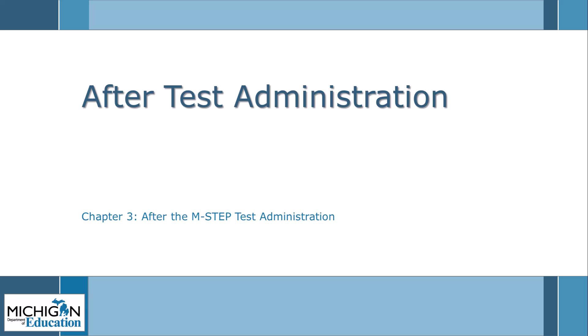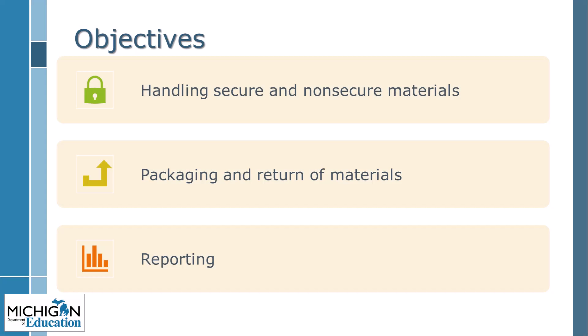This section discusses Chapter 3 of the M-STEP grades 8 and 11 test administration training: after the M-STEP test administration. First, I will discuss the appropriate handling of secure and non-secure materials after testing. Next, I will cover the packaging and return of materials for schools with paper/pencil materials. I will end by discussing preliminary reports availability and final reports.